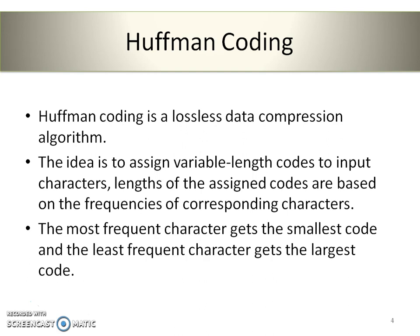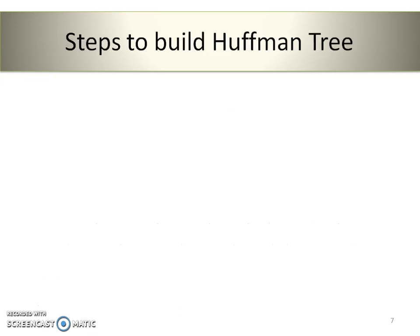The most frequent character, that is the character having the most occurrences, gets the smallest code and the least frequent character gets the largest code. Now let's see what are the steps to build a Huffman tree.